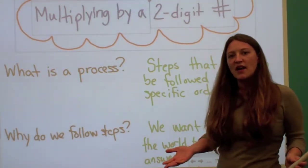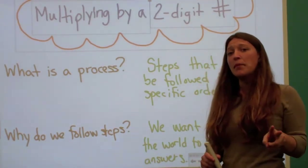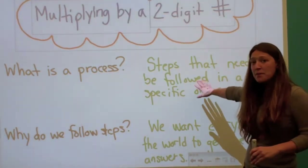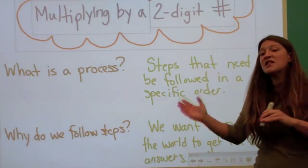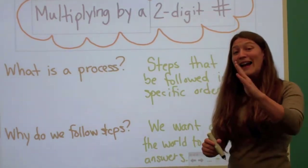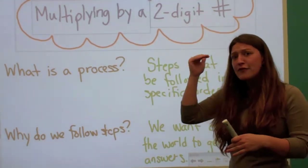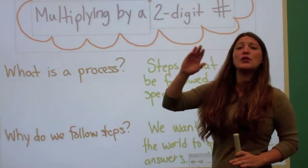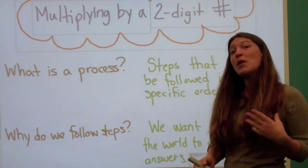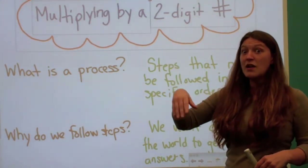What is a process? When we're learning how to multiply by a two-digit number, we have to use a process. A process is steps that we follow in a specific order. I can't go out of order — I have to go step one, step two, step three, step four. When we're learning to multiply by a two-digit number, we will be following certain steps, and it's very important to follow them in that order.